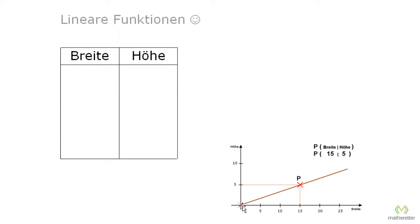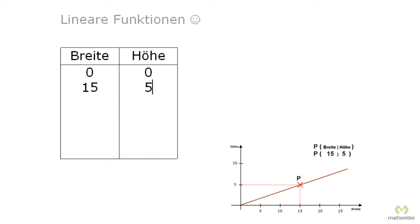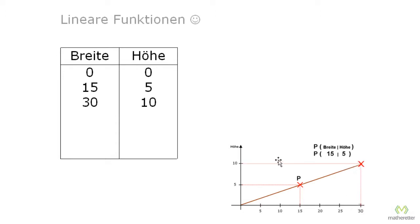Let's enter a few values. If we have the width at 0, we also have a height of 0. However, if we are at a width of 15, we follow the line and we obviously have a height of 5. And at a width of 30 we have a height of 10. So we take three points that are easy to read.